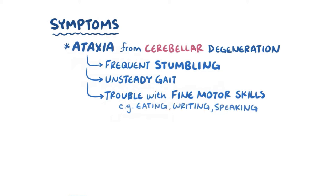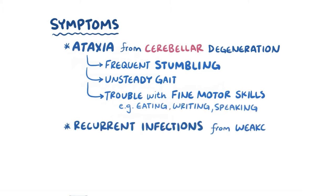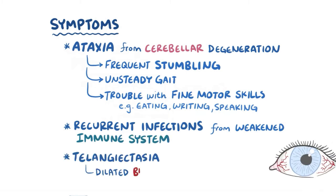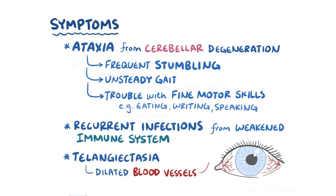and trouble with fine motor movements like those needed for eating, writing, or speaking. It's also common to see recurrent infections because of the weakened immune system. The other main symptom is telangiectasias, which are dilated blood vessels visible especially on the whites of the eyes, and these develop for reasons we don't really know.